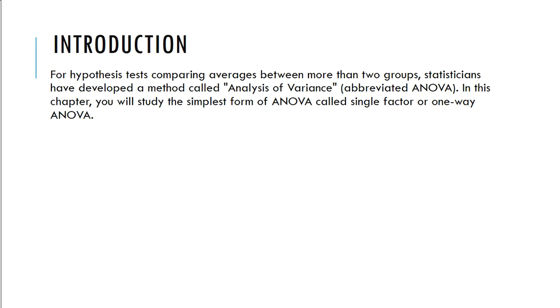So for hypothesis testing, comparing averages between more than two groups, statisticians have developed a method called analysis of variance. We call it ANOVA. In this chapter, you're going to study about ANOVA. We're going to do the easiest, a single factor or a one-way ANOVA.